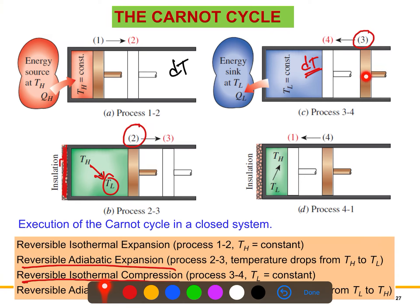The process continues until the piston reaches position four. The temperature remains constant at TL. This is an isothermal process — not adiabatic. The temperature difference between the gas and the sink never exceeds dT, so when it is dT it transfers heat to the energy sink. The heat rejected from this gas to the energy sink is QL.